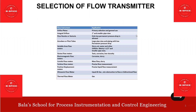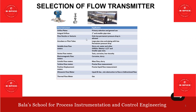Orifice plates: the differential orifice is the primary selection and generally used. Integral orifice is used for line size 1 inch and smaller pipe size. Flow nozzle or venturi is used when only low permanent pressure drop is allowed. Annubar or pitot tube is used for large pipe size and piping with low permanent pressure drop.